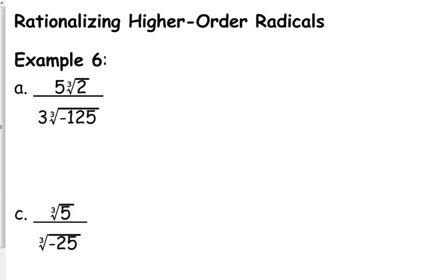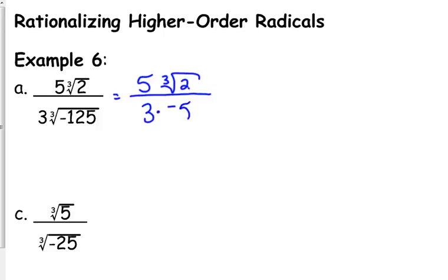Now negative one twenty-five is a perfect cube for B. That doesn't mean we won't have any simplifying to do — it just means we don't have to rationalize. Just like with square roots, always ask yourself: is there a perfect cube hidden somewhere in this problem? The cube root of negative one twenty-five is negative five, so those fives can cancel, and we don't leave a negative in the denominator, so this is negative cube root of two.